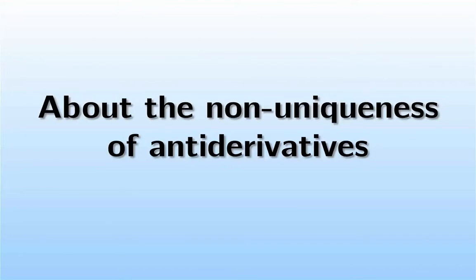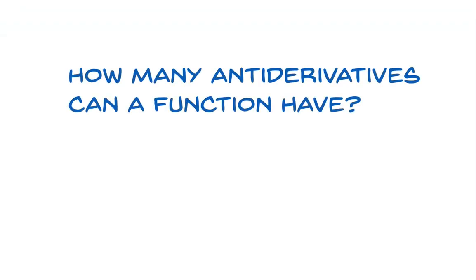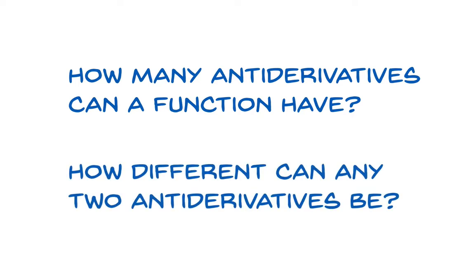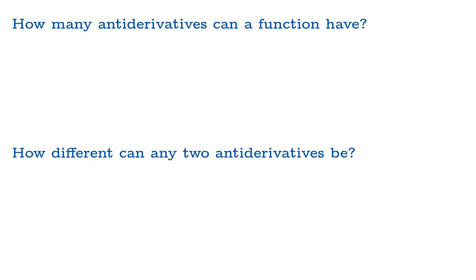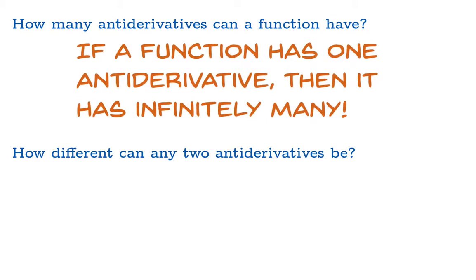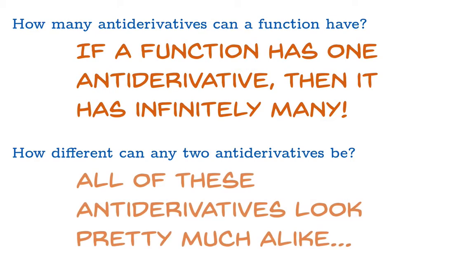In this video, we're going to talk about the non-uniqueness of antiderivatives. We're basically going to look at the following two questions: How many antiderivatives can a function have? And how different can any two antiderivatives be? Let's just jump to the punchline right now. If a function has one antiderivative, then it has infinitely many. And all of these antiderivatives look pretty much alike. So we're going to spend the rest of the video filling in the details to these claims.